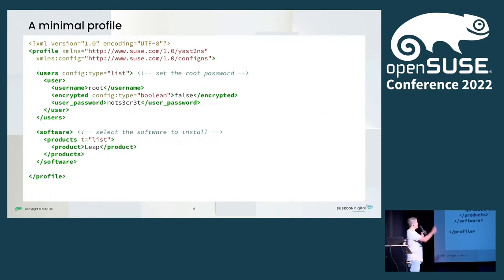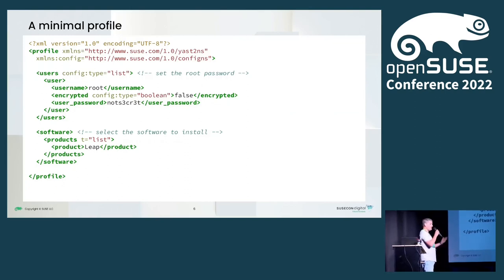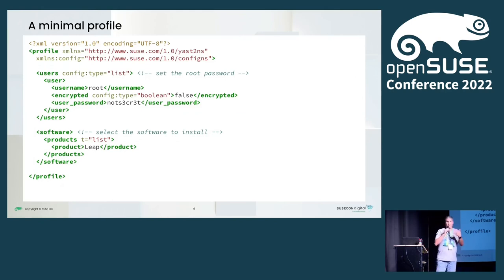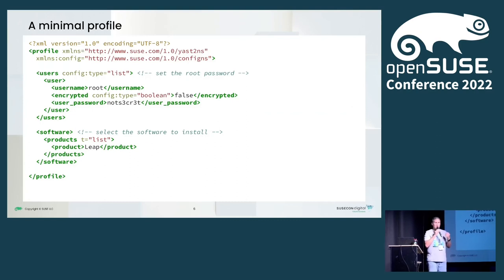Basically, you have a section that describes the users — in this case we are only setting the root password — and below you have the software section that tells AutoJazz which product it should install. The relevant thing about this slide is what is not in the slide. We are not saying anything about partitioning schema, not saying anything about bootloader. Since AutoJazz is part of Jazz, it will rely on Jazz to figure out how to partition the disk, set up the network, install the bootloader, and so on. You only need to specify those things that are relevant to you.